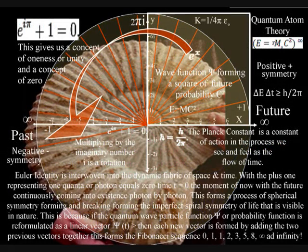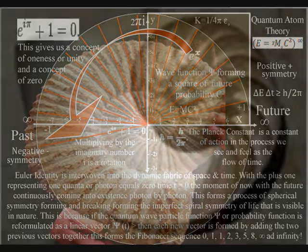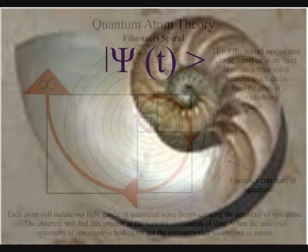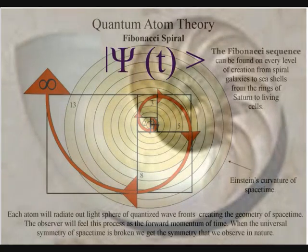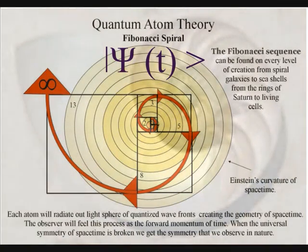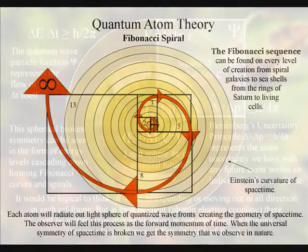This is because if the quantum wave particle function or probability function is reformulated as a linear vector, then all the information I can find says that each new vector is formed by adding the two previous vectors together. This forms the Fibonacci sequence.